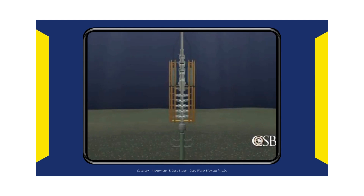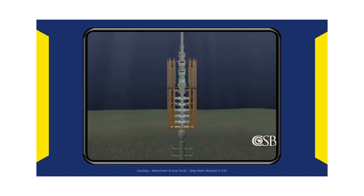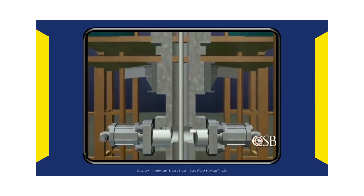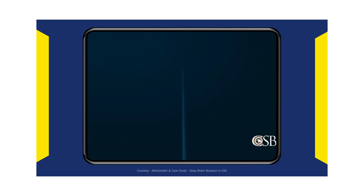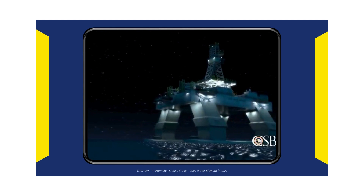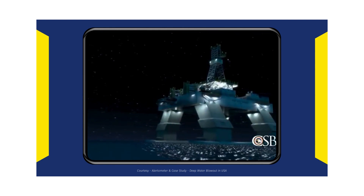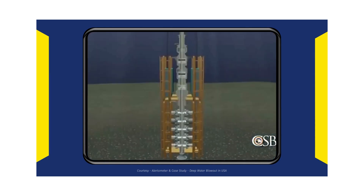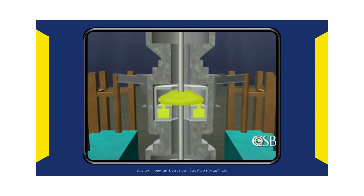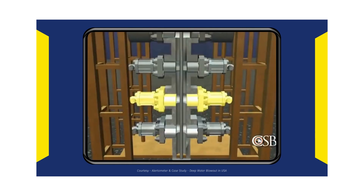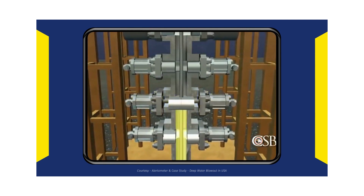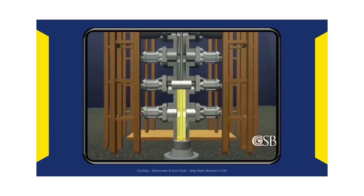At approximately 8:45 p.m. on April 20, 2010, a kick occurred in the Macondo well. Oil and gas entered the wellbore undetected, eventually passing above the blowout preventer and traveling quickly up the riser toward the Deepwater Horizon and the 126 people on board. Just after 9:40 p.m., drilling mud forced upwards by the rising oil and gas suddenly blew out onto the rig. Crew members responded by closing the upper annular preventer in the BOP; however, this did not seal the well as intended, and flammable oil and gas continued to flow. Next, the crew closed a pipe ram, which successfully closed the annular space and sealed the well, but this proved to be only a temporary fix.